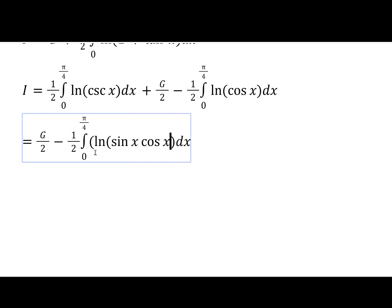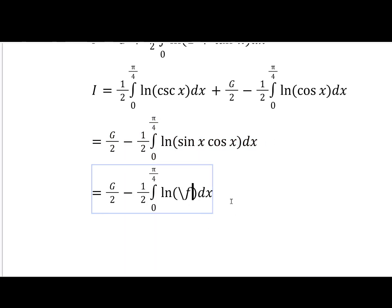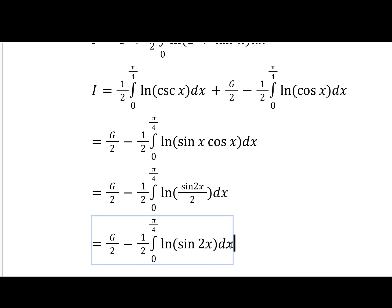And now this is a good chance to use the double angle. So sin x cos x is just half of sin 2x, pretty standard. And we can split up the logarithm again into log sin 2x minus log 2. And that would be plus half the integral from 0 to π/4 of log 2.